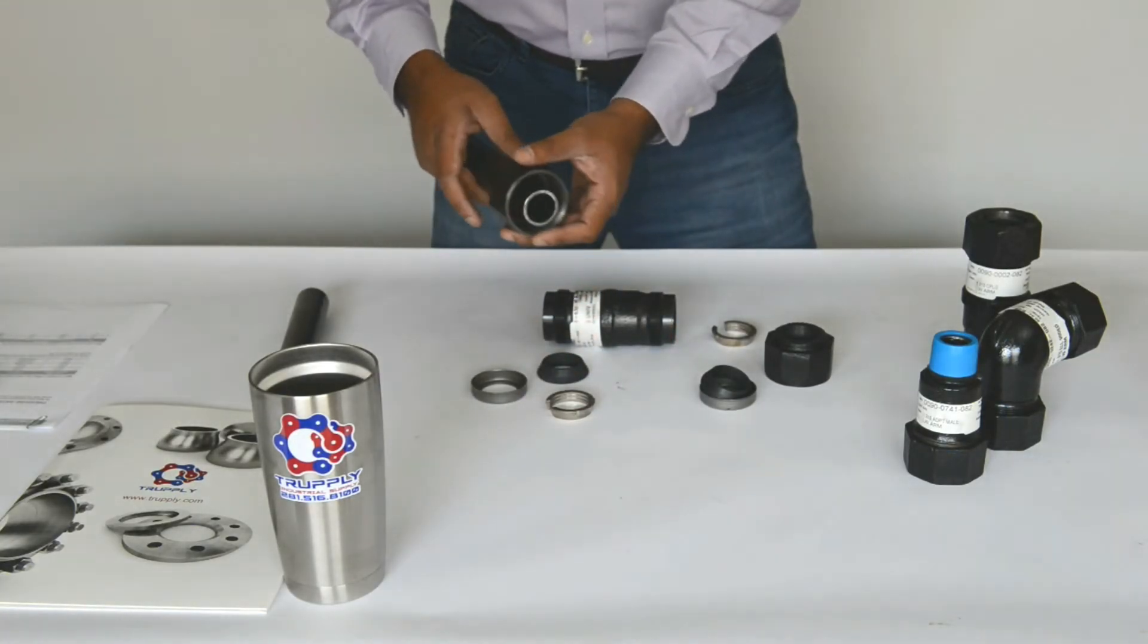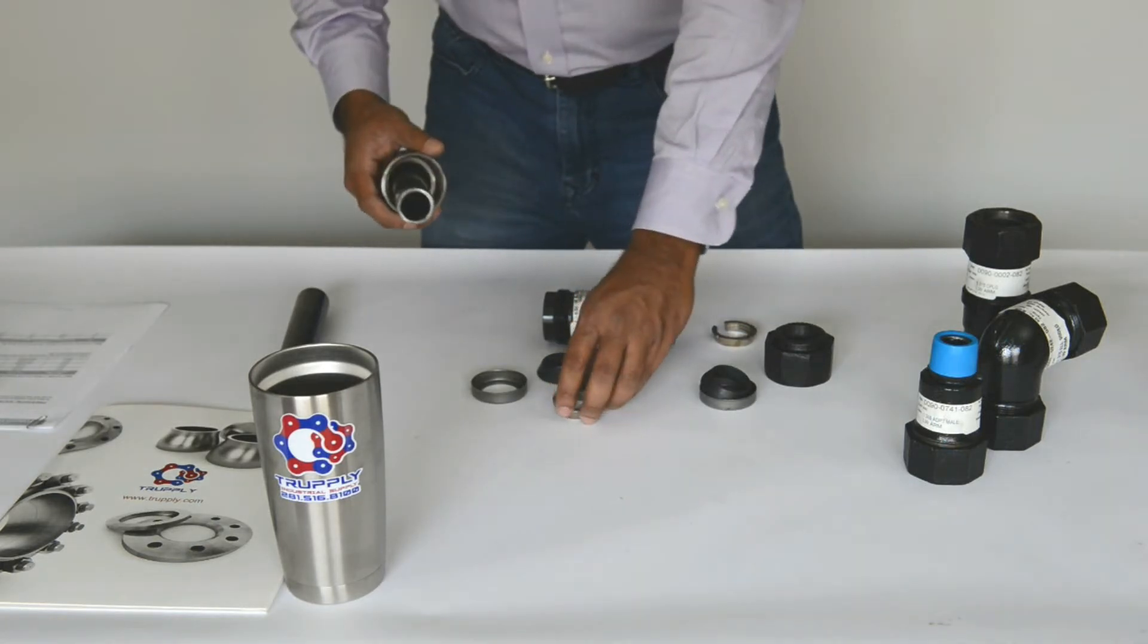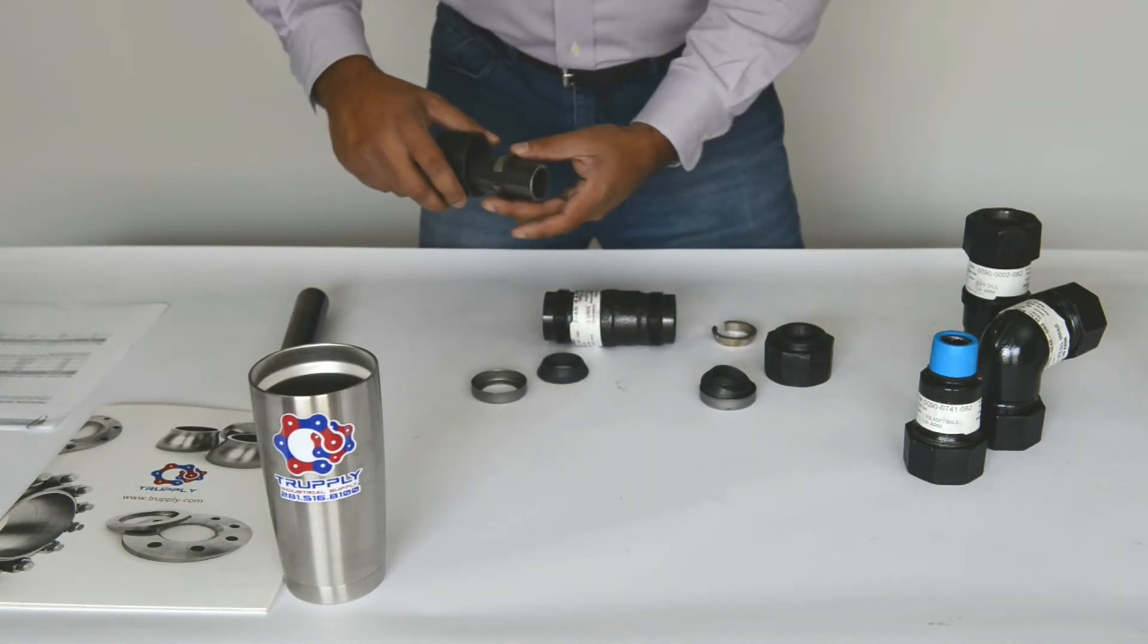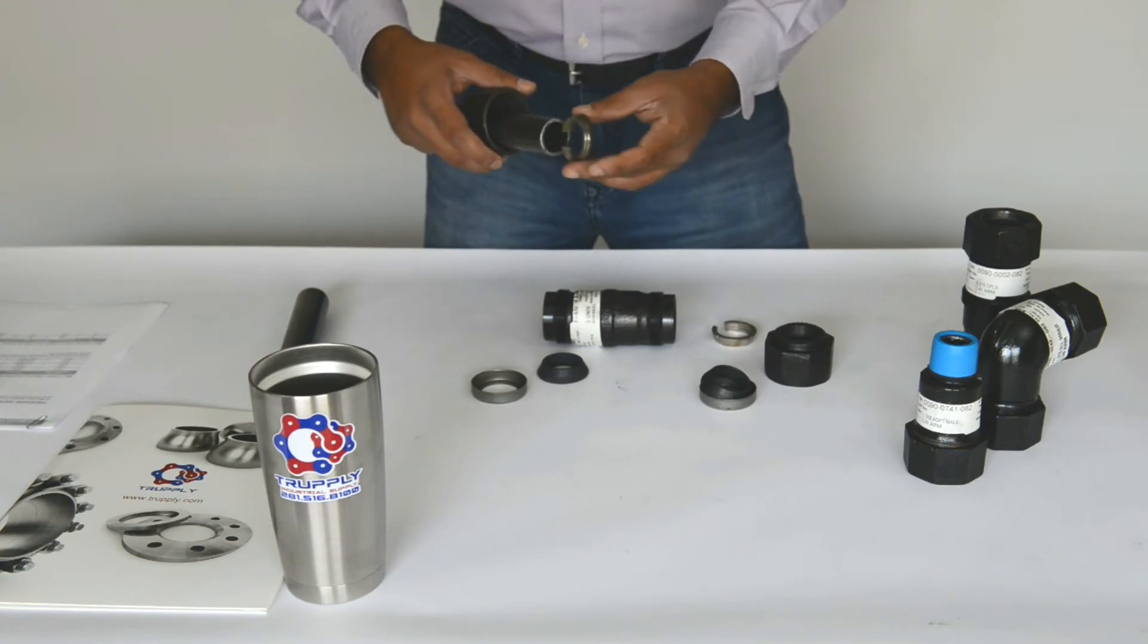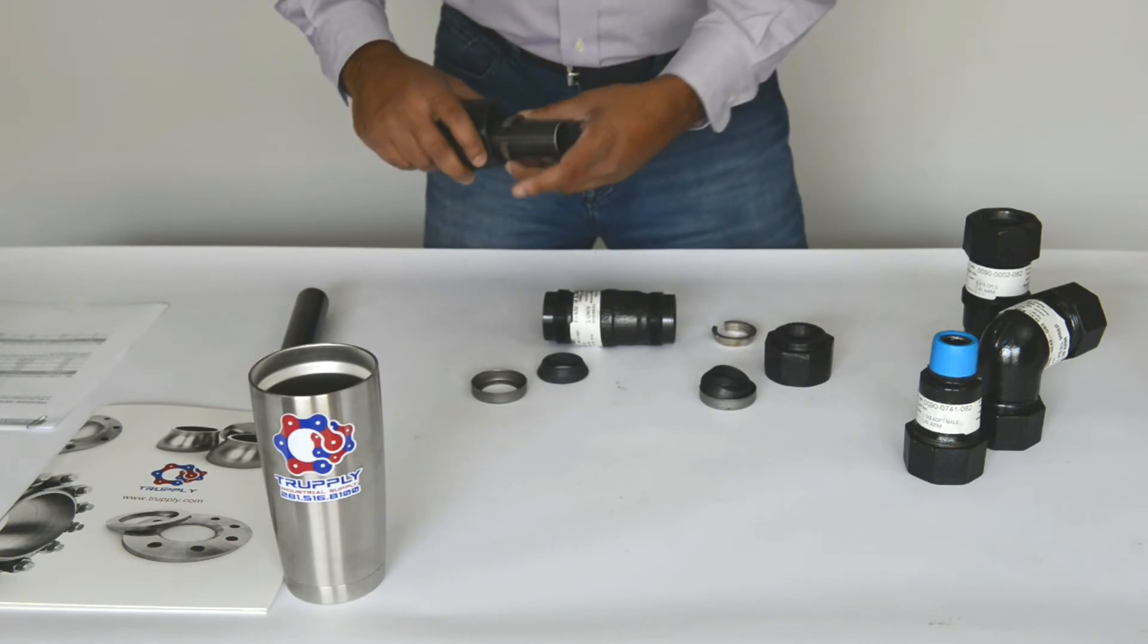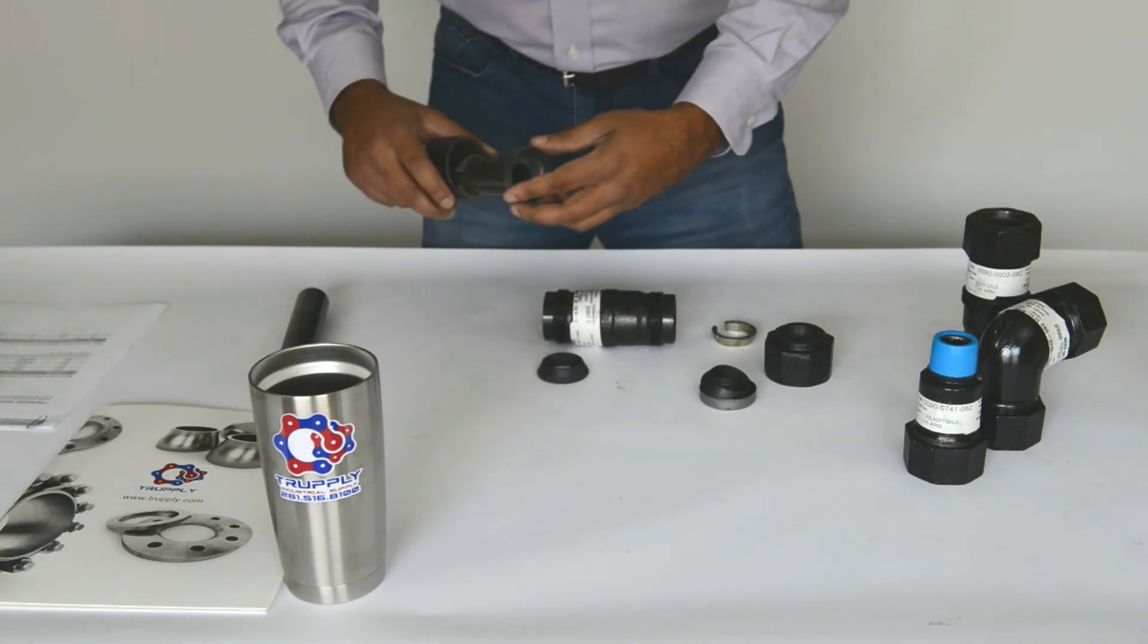And so start from the very outer. This is the nut. Slide this on. This is the lock ring that goes like this. And the way to remember is that the tapered edge goes like this.